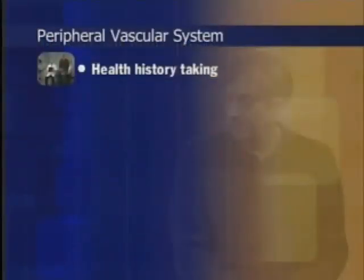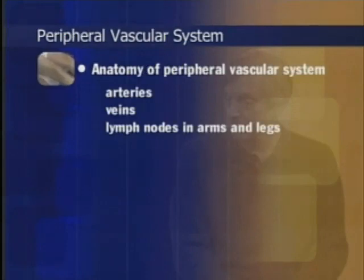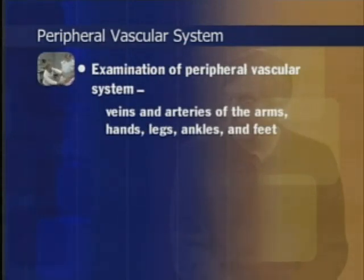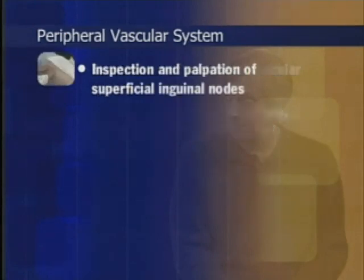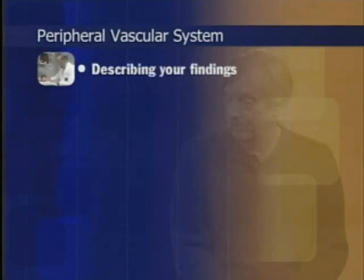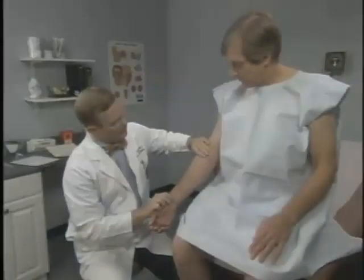This video begins with a brief overview of health history taking, followed by the anatomy of the peripheral vascular system, including the arteries, veins, and lymph nodes in the arms and legs, followed by examination of the peripheral vascular system, including veins and arteries of the arms, hands, legs, ankles, and feet, inspection and palpation of the superficial inguinal nodes, and assessment for chronic arterial insufficiency.